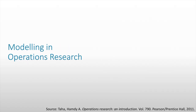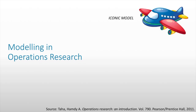So what are the different models in operations research? First, we have iconic models. Iconic models are basically prototypes or real-life samples of what the real-life problem is. For example, a toy plane is an iconic model of the real plane, which is very big. Since we wanted only a smaller version, we created a toy plane — this is an iconic model.